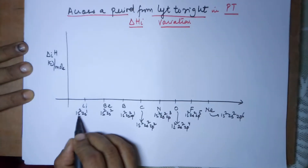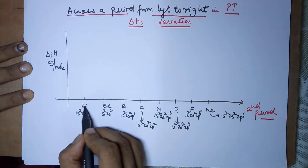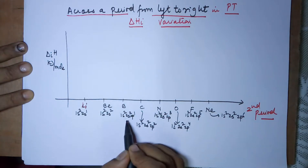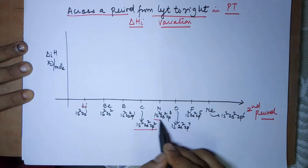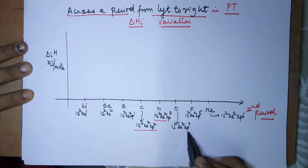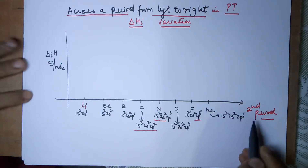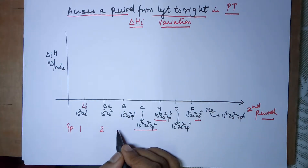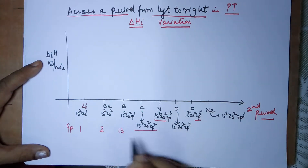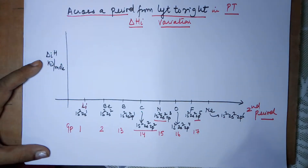I have specifically taken the example of the second period. The elements are: lithium, beryllium, boron (1s2 2s2 2p1), carbon (1s2 2s2 2p2), nitrogen (1s2 2s2 2p3), oxygen (1s2 2s2 2p4), fluorine (1s2 2s2 2p5), neon (1s2 2s2 2p6). The group numbers are: group 1, group 2, then groups 3–12 are transition elements. Group 13 for boron, 14th for carbon, 15th for nitrogen, 16th for oxygen, 17th for fluorine, and 18th for neon.